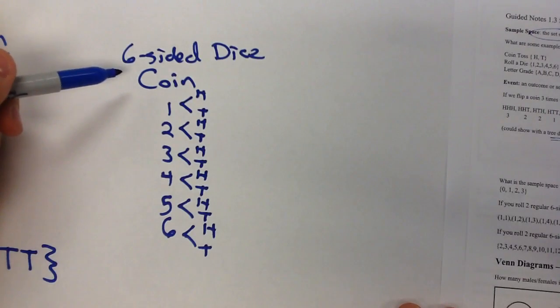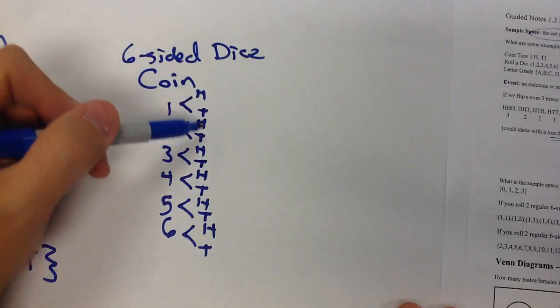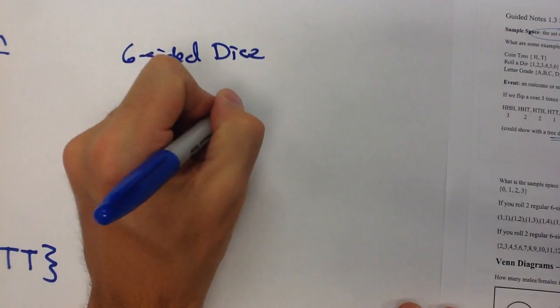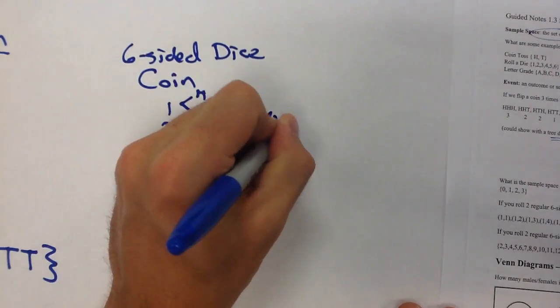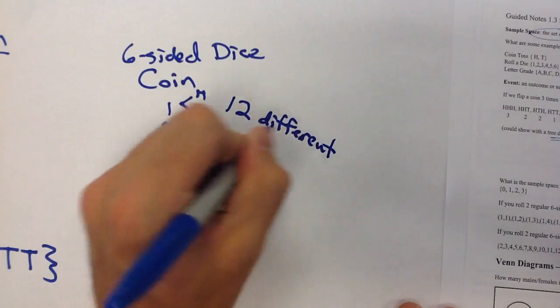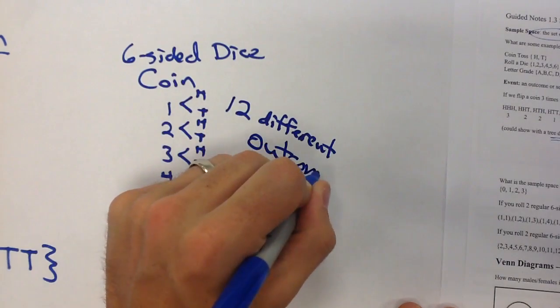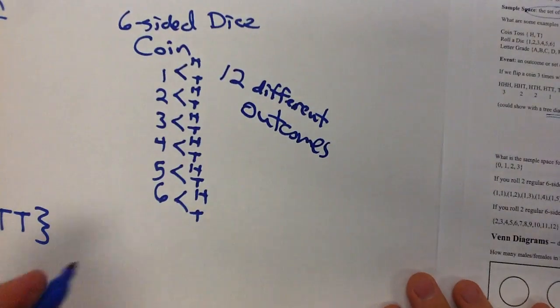Now I had six options, I had two options. So this actually results in having twelve different outcomes.